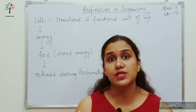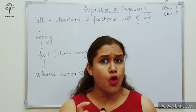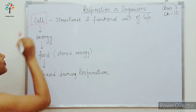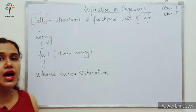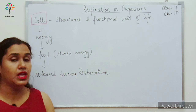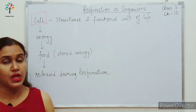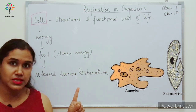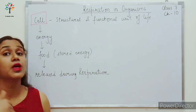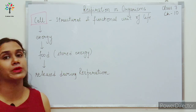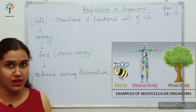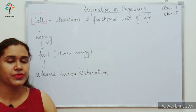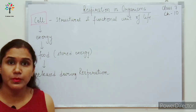Our human body is made up of very small microscopic units called cells, and all living organisms are made up of cells. Some living organisms are unicellular — that means there is only one cell — and some organisms are multicellular, meaning more than one cell. Unicellular organisms, like amoeba, have only one cell.